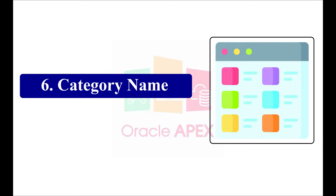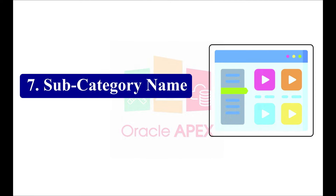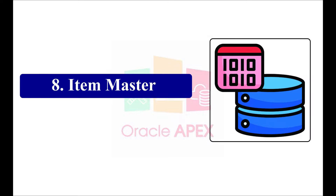Number six is category name — here you have to add categories of your products. Number seven is subcategory name — here you have to add a subcategory for every product. Number eight is item master.